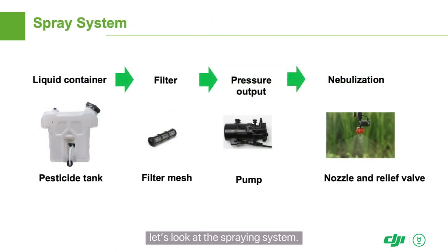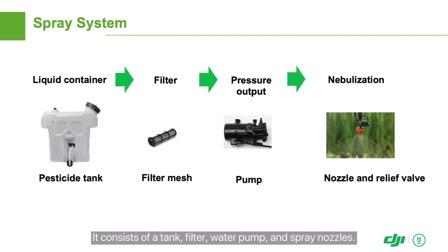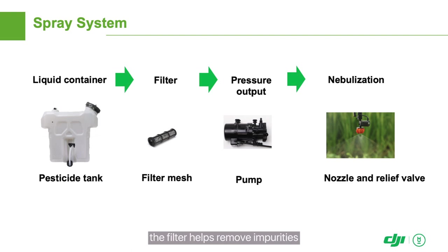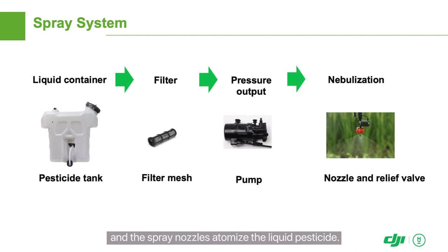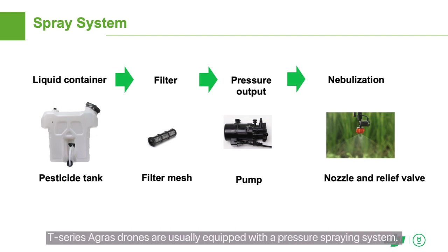Let's look at the spraying system. It consists of a tank, filter, water pump, and spray nozzles. The tank carries the liquid pesticide, the filter helps remove impurities, the water pump generates pressure, and the spray nozzles atomize the liquid pesticide. T-Series Agris drones are usually equipped with a pressure spraying system. We recommend using water-based pesticides to avoid clogging the nozzle.